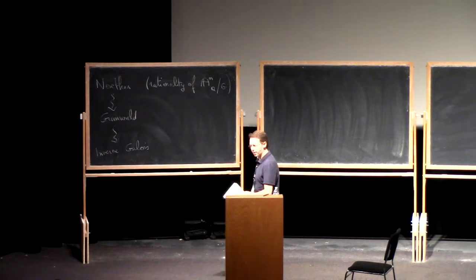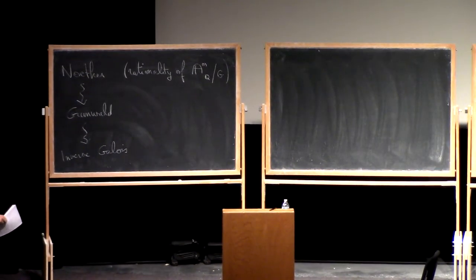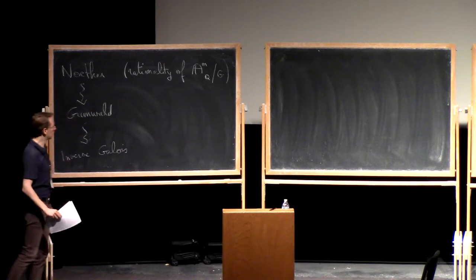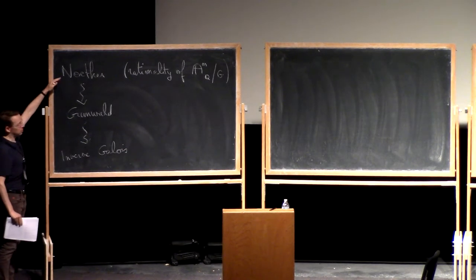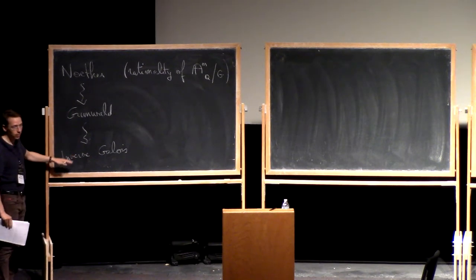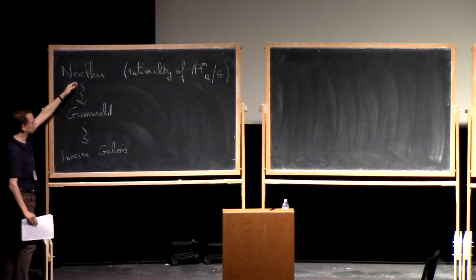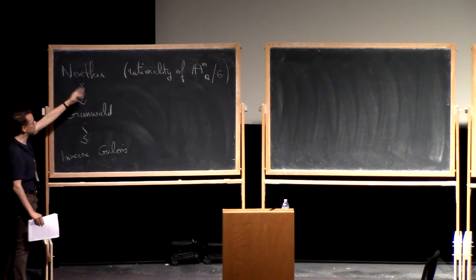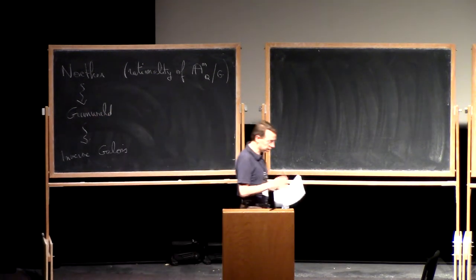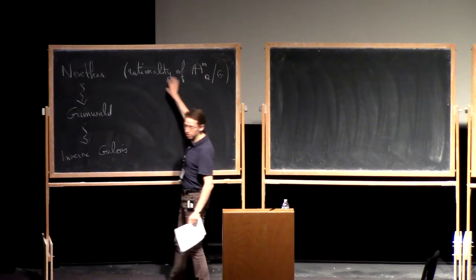Let me remind you what we did yesterday. I talked about the Noether problem, which was the rationality of this variety — the quotient of Aⁿ by G acting by permutation on the coordinates. I explained that it's a stronger problem than Grunewald's problem, which is itself stronger than the inverse Galois problem. And I explained that Noether's problem has a negative answer in general.